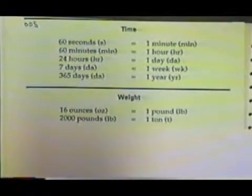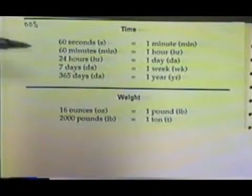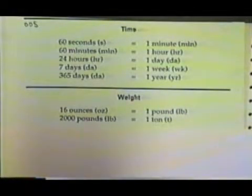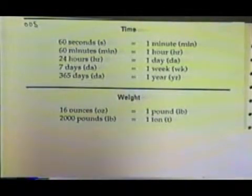With time, the units of measurement that we'll be using are 60 seconds equals 1 minute, 60 minutes equals 1 hour, 24 hours equals to 1 day, 7 days equals 1 week, 365 days equals 1 year.